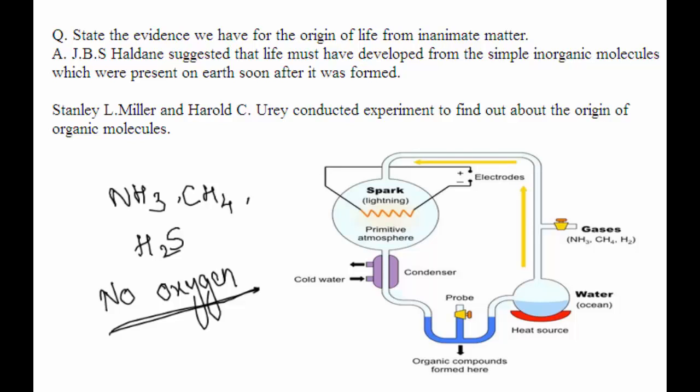He speculated that the conditions on Earth at that time could have given rise to more complex organic molecules that were necessary for life. The first primitive organism would arise from further chemical synthesis. Later on, scientists called Stanley Miller and Urey conducted experiments to find out about the origin of organic molecules.